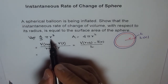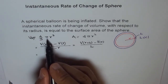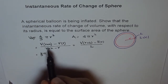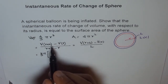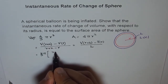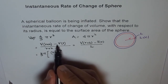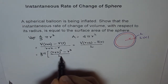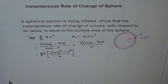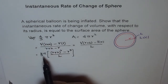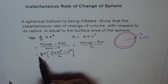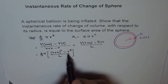Which will give us V(r+h) minus V(r) over h. Now, we replace the terms: 4/3 π is constant, so we can take 4/3 π outside. Then r³ is the thing that changes, so we get 4/3 π times (r+h)³ minus r³, all divided by h.